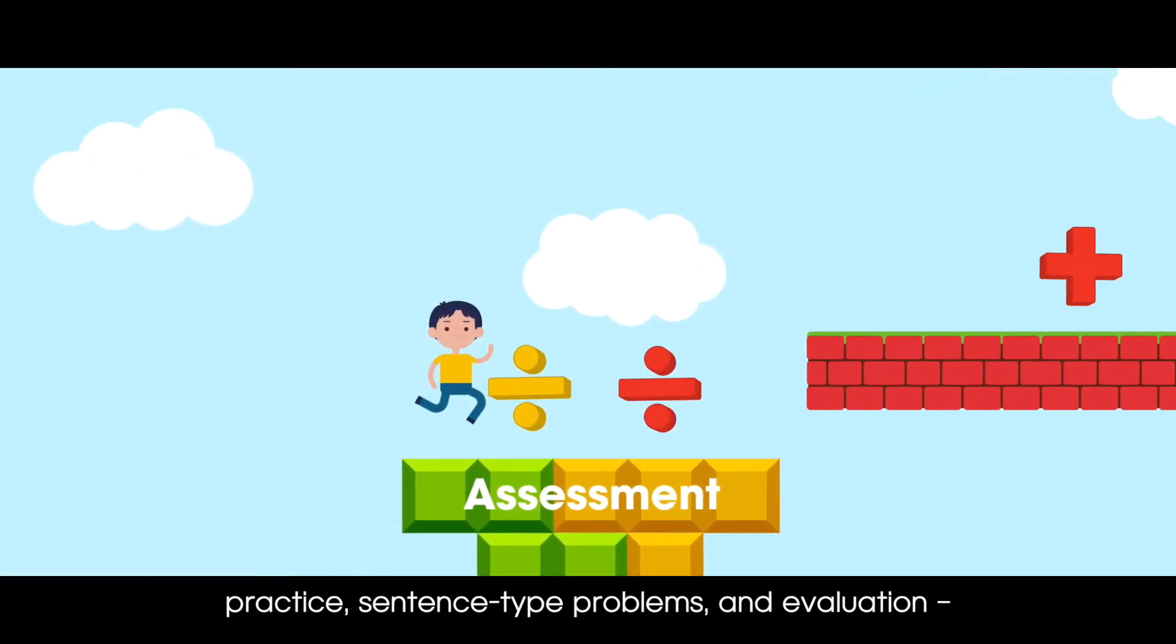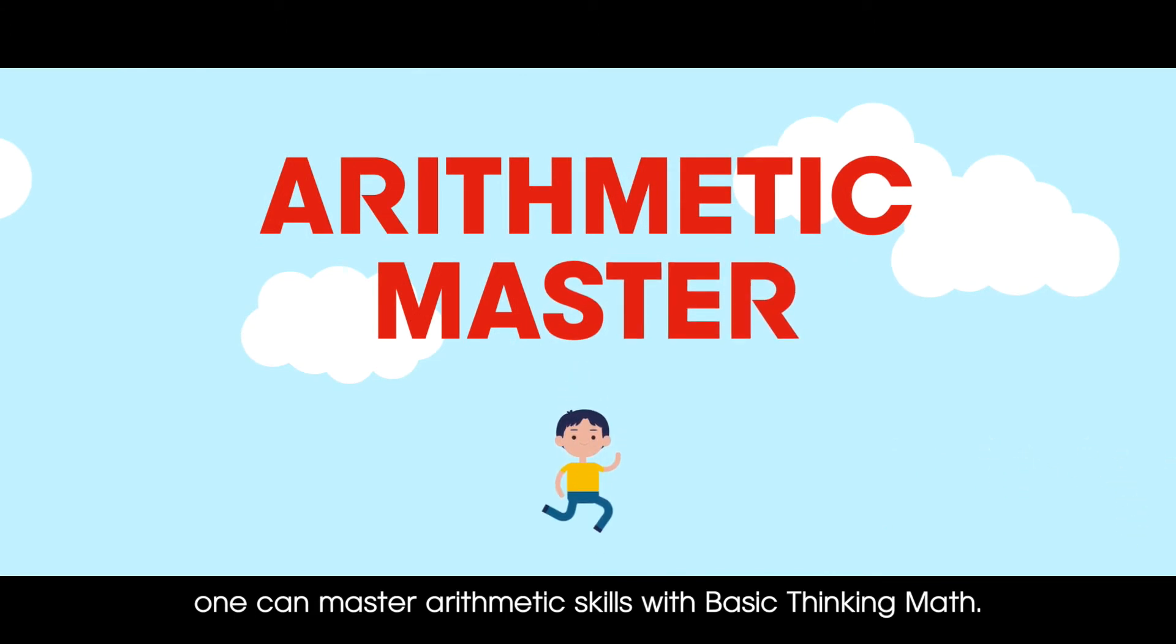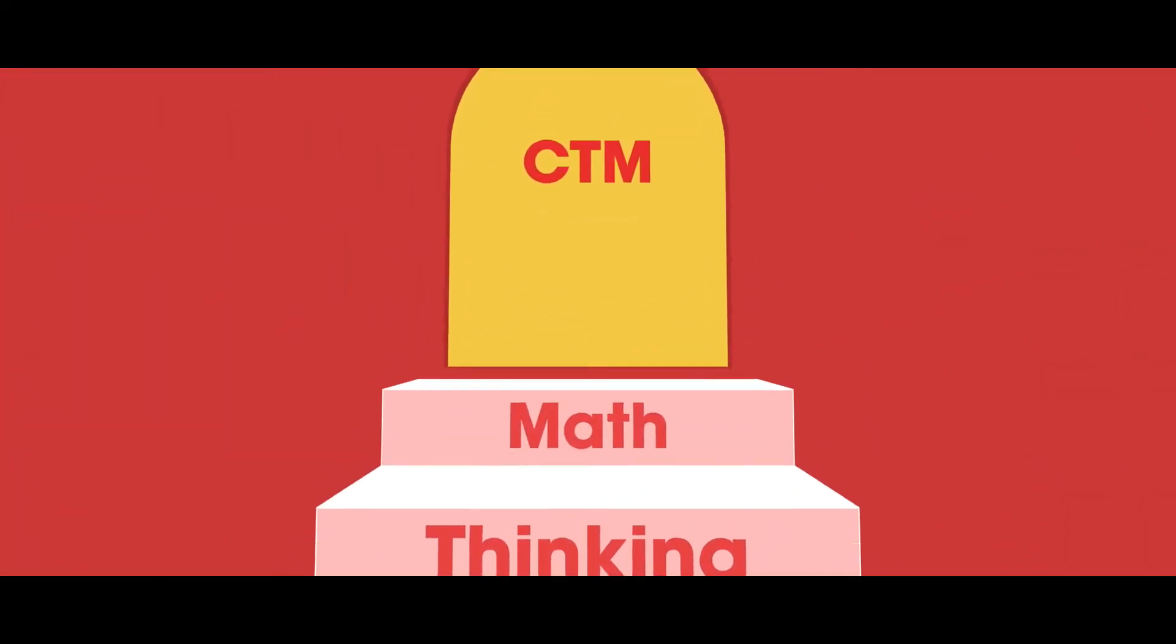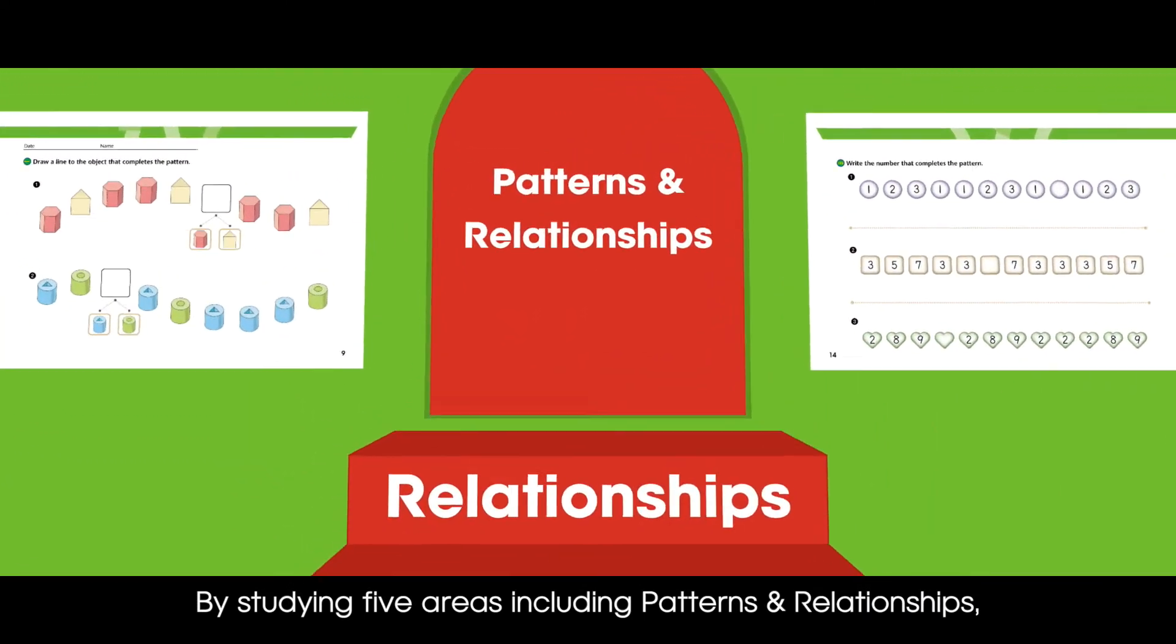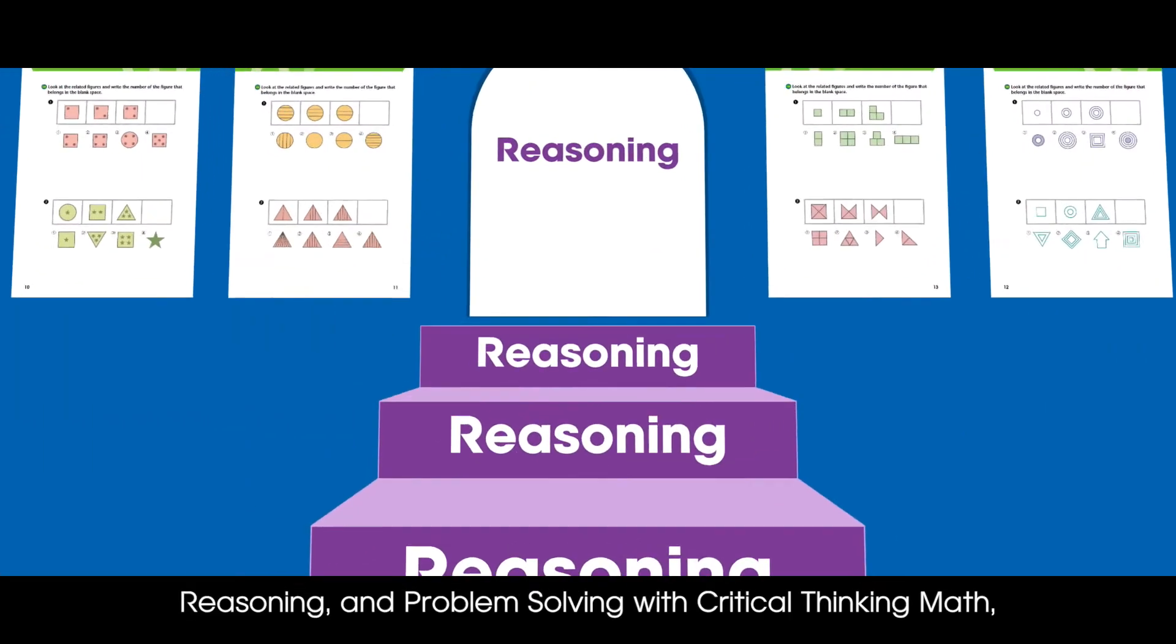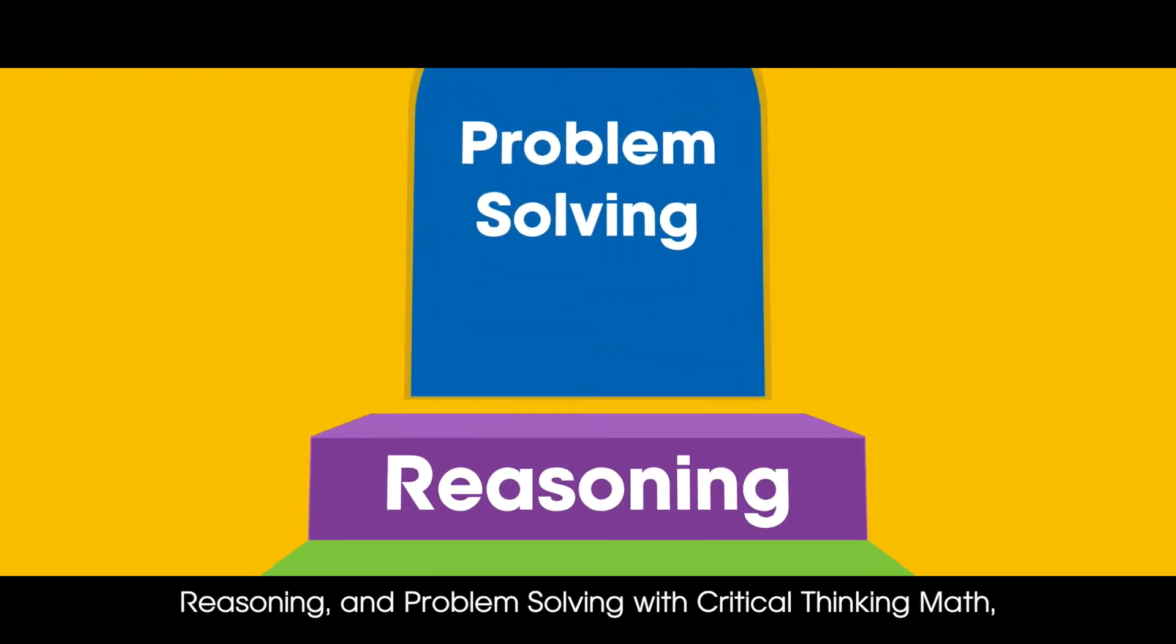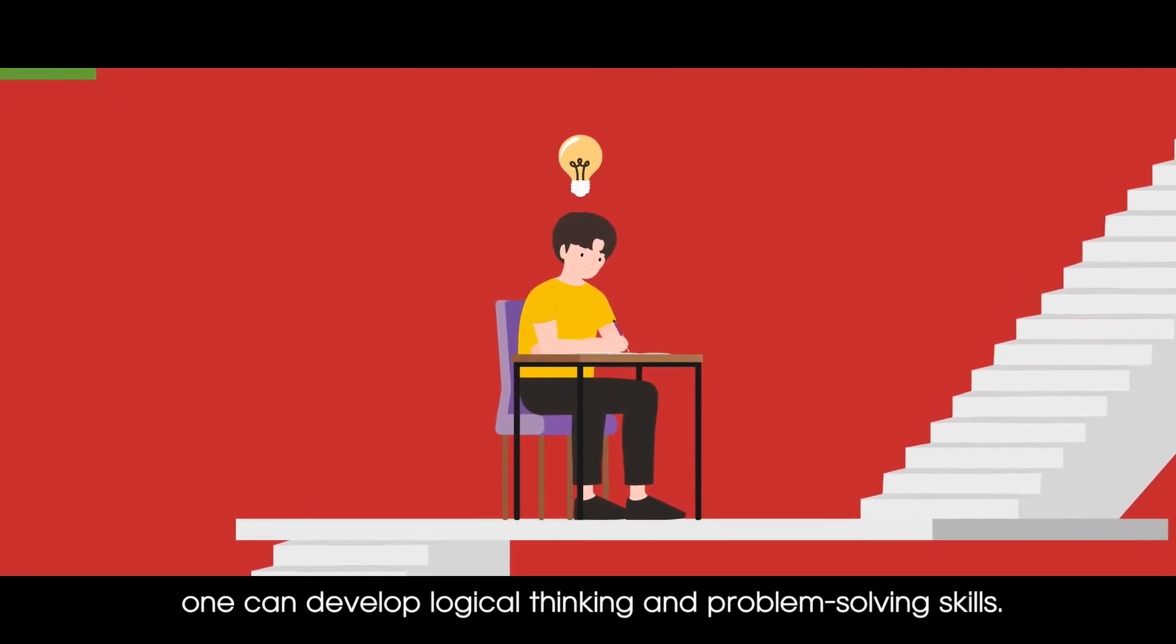One can master arithmetic skills with Basic Thinking Math by studying five areas including patterns and relationships, geometry, measurement, reasoning, and problem-solving. With Critical Thinking Math, one can develop logical thinking and problem-solving skills.